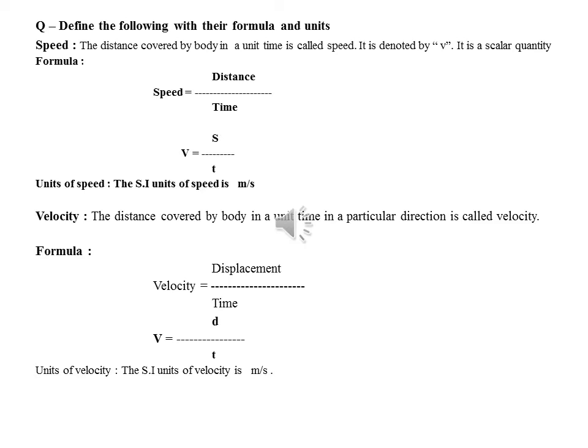We are looking at two quantities: distance and time. The distance covered by a body per unit time is called speed. Its symbolic form is V equals distance S divided by T. The standard international unit of speed is meter per second.